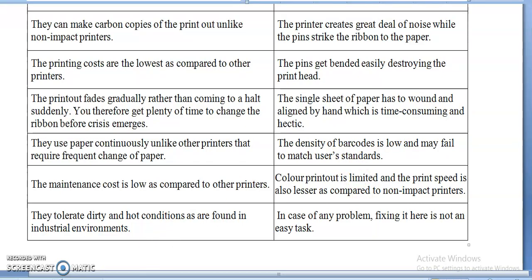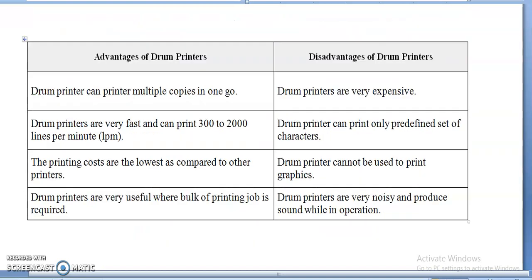Next are drum printers. The advantages: drum printers can print multiple copies at once, as papers are rolled over the drum. Newspaper printing is an example. They are very fast, printing 300 to 2,000 lines per minute. The printing costs are the lowest compared to other printers. Drum printers are very useful where bulk printing is required, such as in publishing houses and print media.